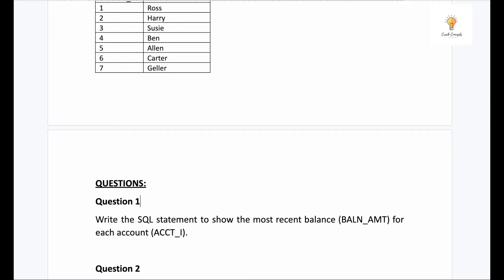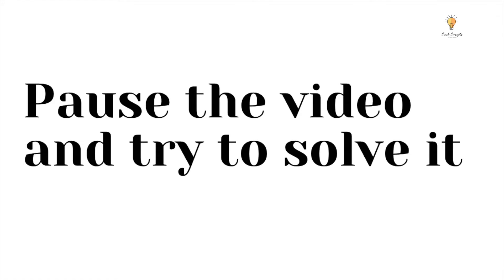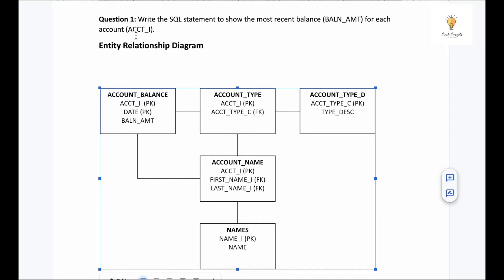Let's begin with the first question: write the SQL statement to show the most recent balance for each account. Our first question is write the SQL statement to show the most recent balance. The key outputs we need are balance amount and account. Our first job is to find those two columns in the entity diagram and then find the relation between them. As you can see, balance amount is here and account is also here — both columns are in the same table, which makes it easier for us to write the query.